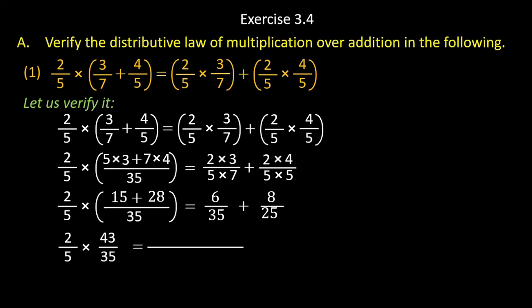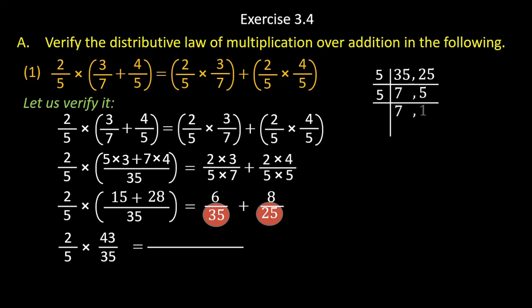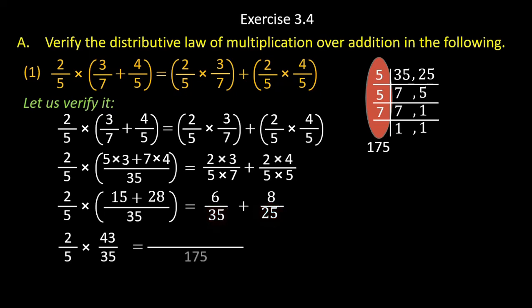Just take LCM of 35 and 25. We find LCM as learned in previous sections. The LCM of 35 and 25 will be 175. So we will write 175 here.